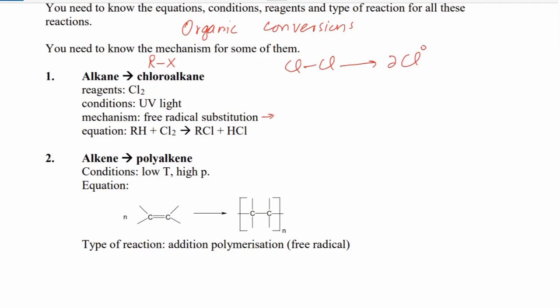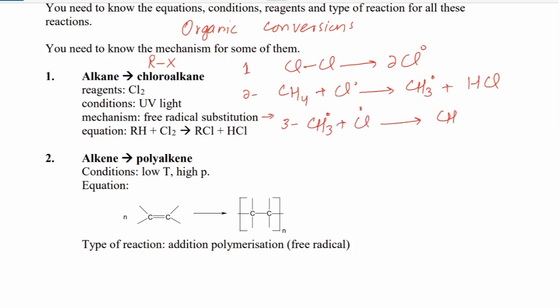The initiation step is step one. The second step is propagation, in which the chlorine free radical attacks the alkane and a free radical of the alkane — the methyl free radical — is found, and HCl is found. In the third step there is termination, where the chlorine free radicals react together and CH₃Cl will be found. So in this way the reaction keeps going and we get the chloroalkane and HCl.